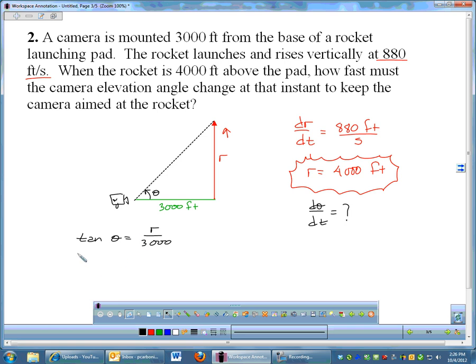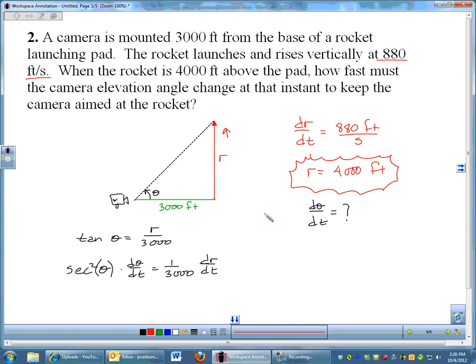So my formula is going to be the tangent of theta equals opposite R over adjacent, 3,000. Then we're going to take the derivative of that. Derivative of tangent is secant squared times secant squared theta. But then we have to multiply by dθ/dt. The derivative of R over 3,000 is going to be 1 over 3,000 - please don't use quotient rule for that - times dR/dt. Now we start trying to plug in. And you're going to run into a little bit of a problem here. dθ/dt is the unknown, so that's going to remain dθ/dt. 1 over 3,000 is already given. dR/dt, that was given. That's 880. I can go ahead and plug in 880 for dR/dt.